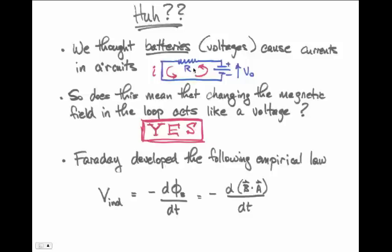This is quite surprising, because previously we thought batteries were the only thing that could drive a current in a circuit — there had to be a voltage to shove current through a resistor like a light bulb. So the question is: does the changing magnetic field in that loop act like a voltage? The answer is yes. Faraday developed the following empirical formula: a voltage is induced in the loop, V_induced, equal to the negative of the change in something called the flux, which is the magnetic field from the bar magnet dotted into the area of the loop.